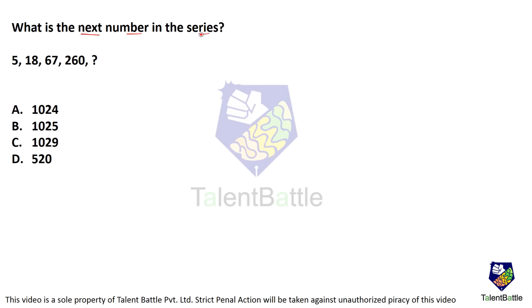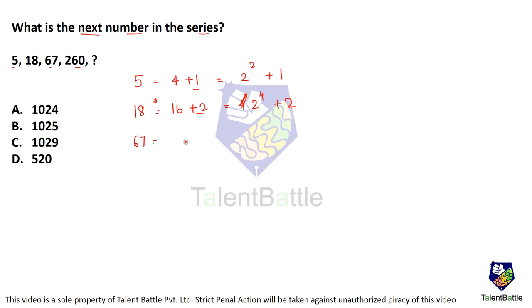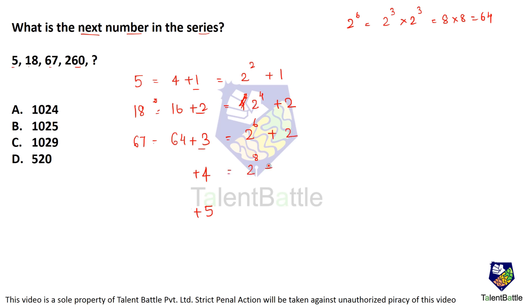What is the next number in the series: 5, 18, 67, 260? If you carefully observe, 5 can be written as 2 squared plus 1. Next, 18 can be written as 16 plus 2, which is 2 to the power 4 plus 2. The power increased by 2. Next, 67 is 64 plus 3, where 64 is 2 to the power 6, so it is 2 raised to 6 plus 3. So the next one has to be 2 raised to 8 plus 4.